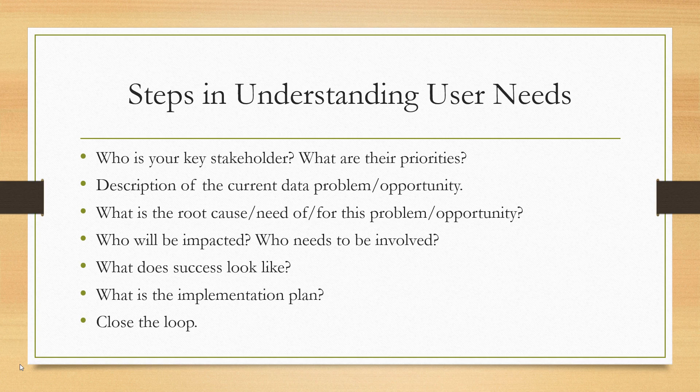Steps in understanding user needs. First, who is your key stakeholder — is it a business leader, a team leader, or an organization leader? Understand their position in the organization, their priorities, and what they care about. Get a clear description of the data opportunity or problem and dig deep to find out what's really behind it. If it's a problem, what is the root cause? Oftentimes we see symptoms, and when we try to solve symptoms we don't solve the underlying problem — the underlying problem is free to crop up somewhere else.